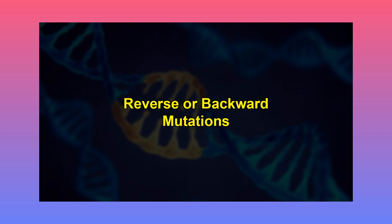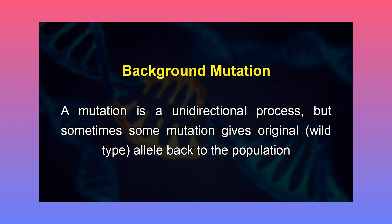Let's now talk about reverse or backward mutations. A mutation is a unidirectional process, but sometimes some mutations give the original wild type allele back to the population. Such a mutation is called a backward mutation. In other words, it gives the original phenotype back into the population by true back mutation or by the occurrence of a secondary mutation. Backward mutations are very rare in nature.